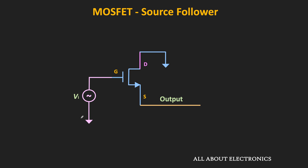In this configuration, the voltage gain is less than 1, or at most very close to 1. The output impedance of the amplifier is very low compared to other configurations, and typically this configuration is used for driving the low impedance load. Using small signal analysis, let us find the input and output impedance as well as the voltage gain of this source follower. At the later part of the video, I will show you how this source follower is very useful for driving the low impedance load.